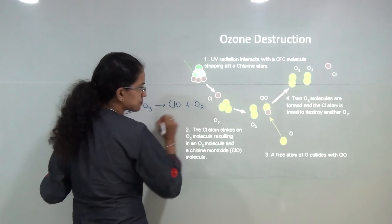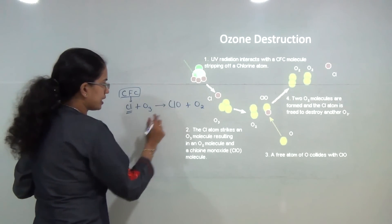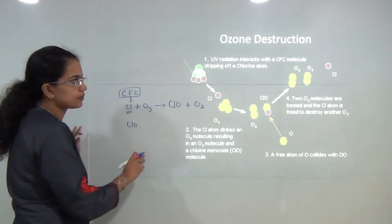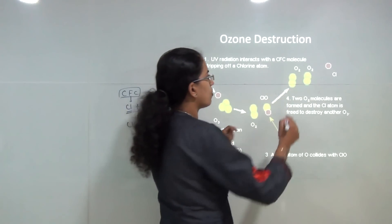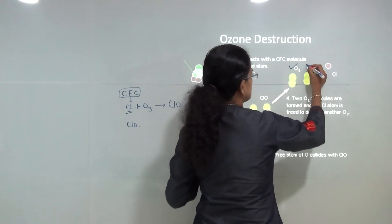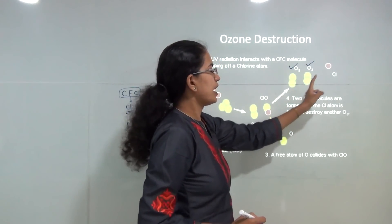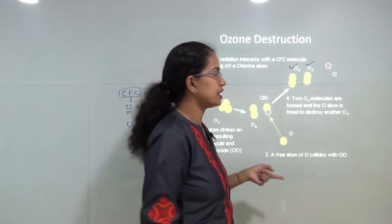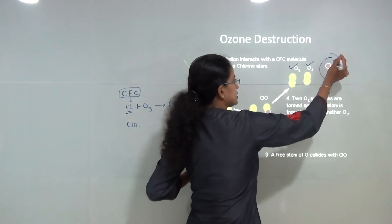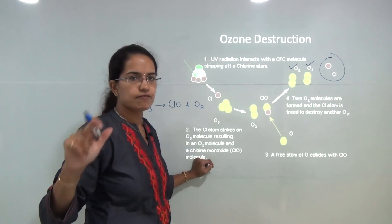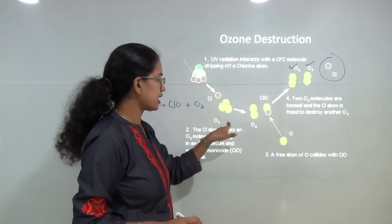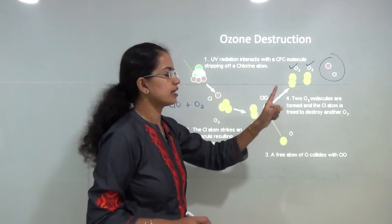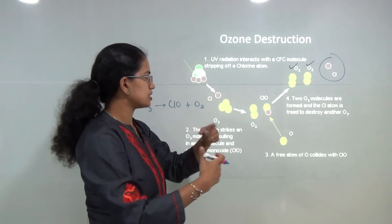These chlorine monoxide molecules react together, forming an oxygen molecule, and chlorine is again released as a free radical. Since chlorine is released as a free radical, it again reacts with ozone, leading to the continued breakdown of ozone.